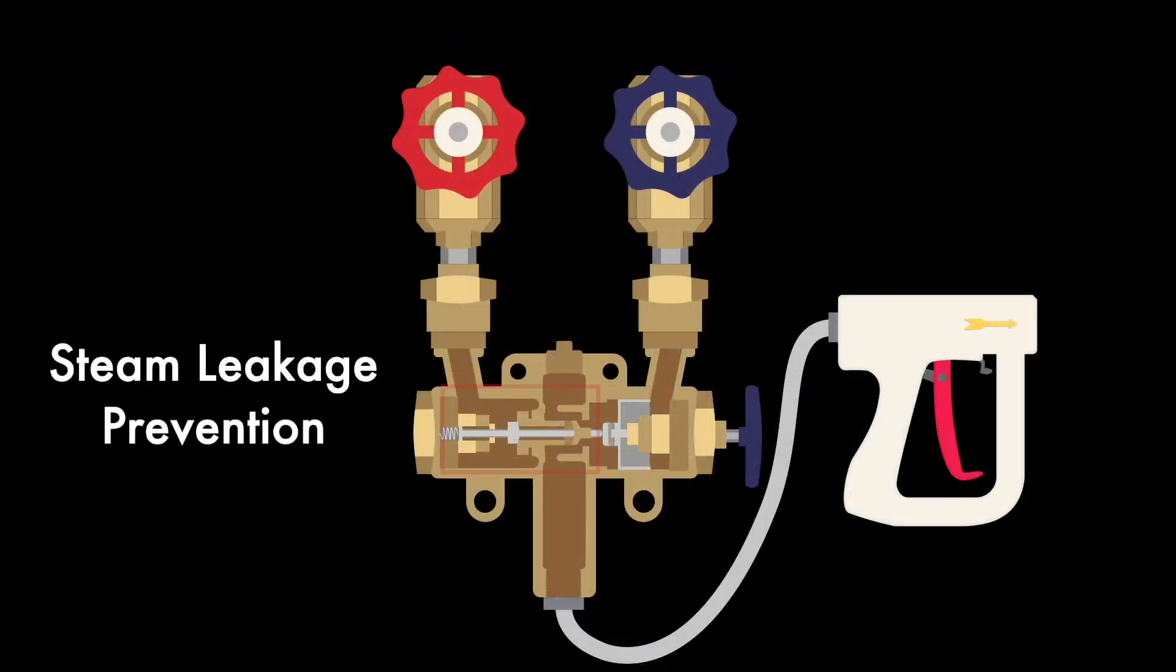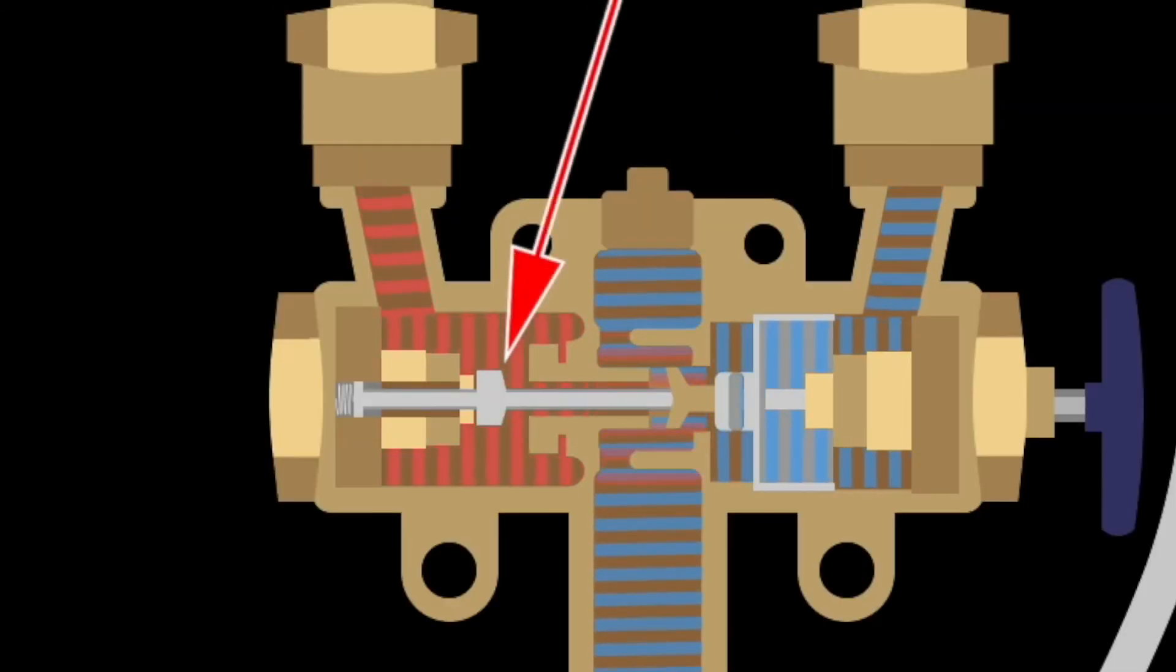To prevent steam from leaking and harming users, SuperClean's steam leakage prevention system is specially designed with a steam poppet that automatically stops steam flow if the cold water psi is too low.